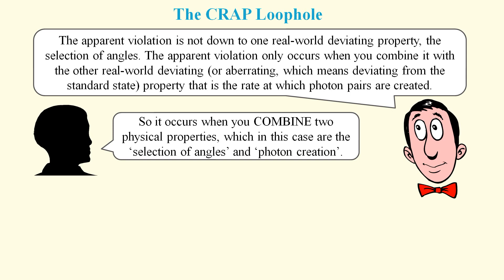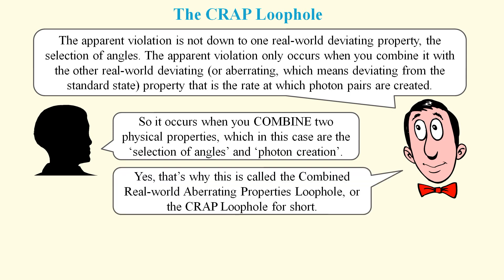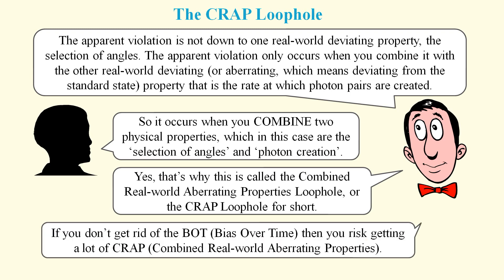This is called the combined real world aberrating properties loophole, or the CRAP loophole for short. And if you don't get rid of the bias over time, then you risk being susceptible to this loophole.